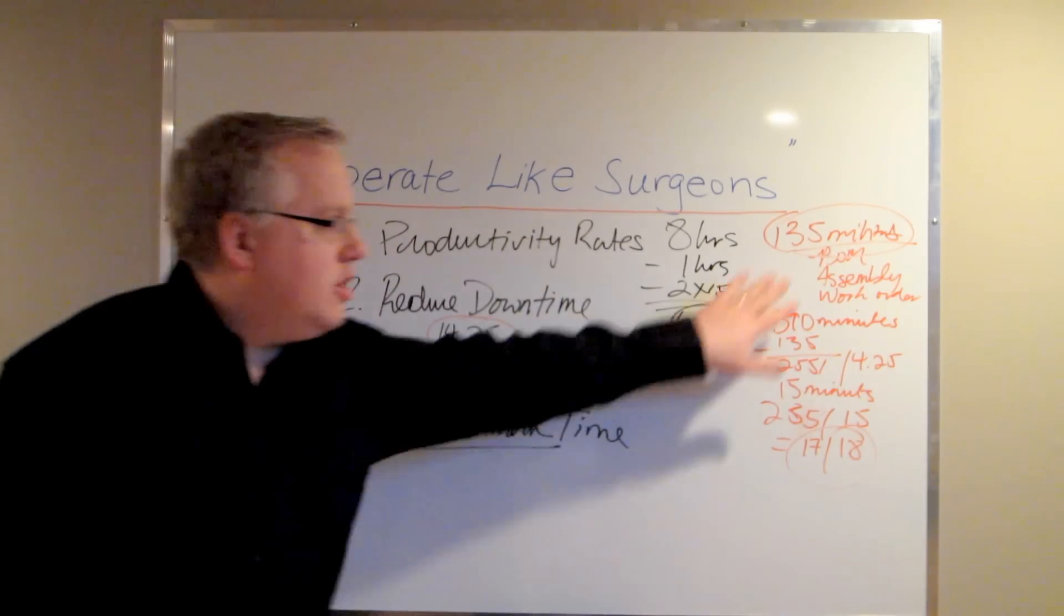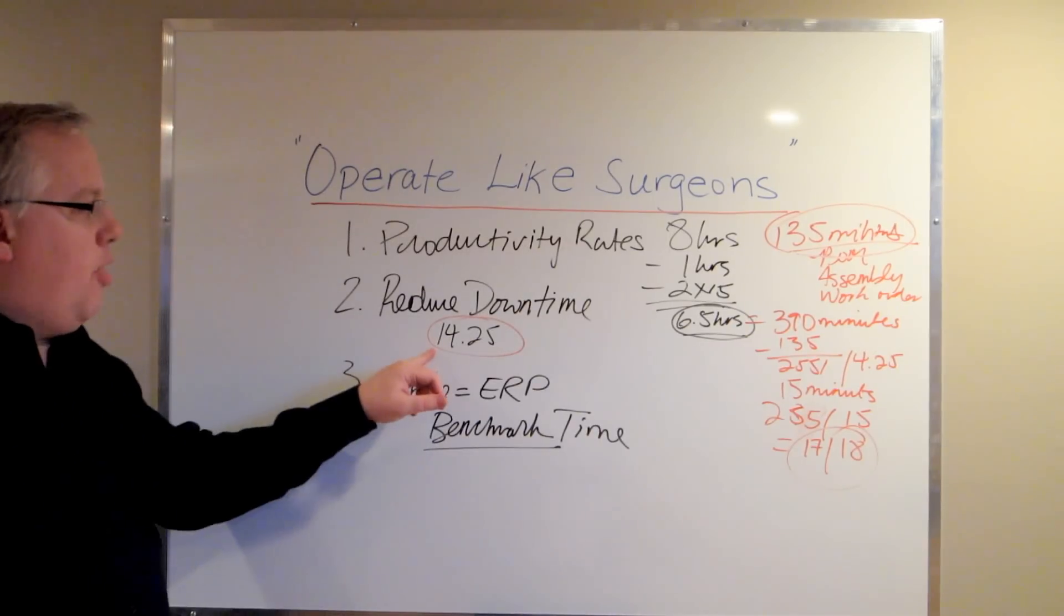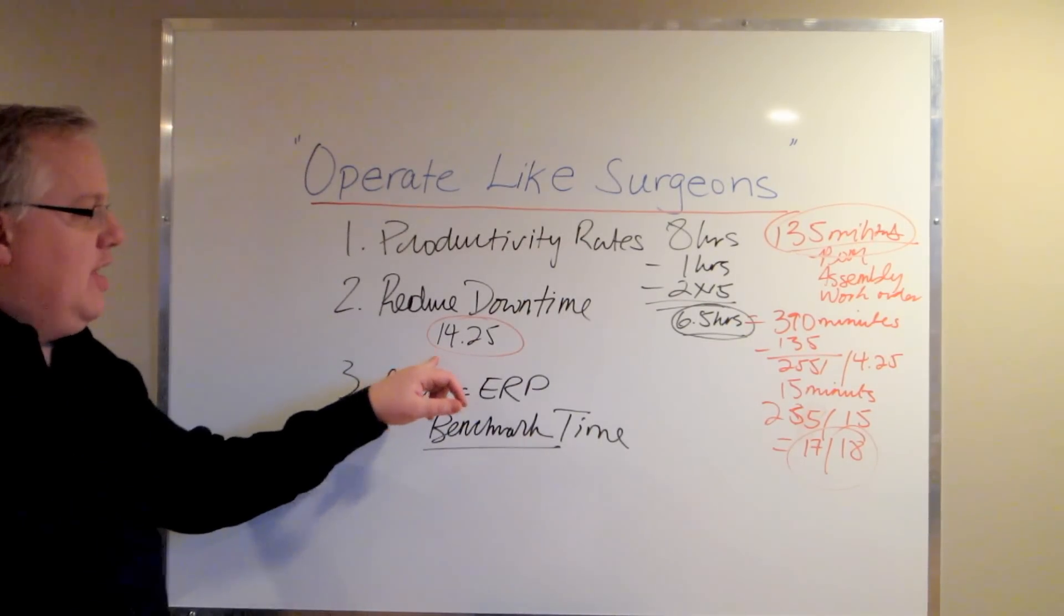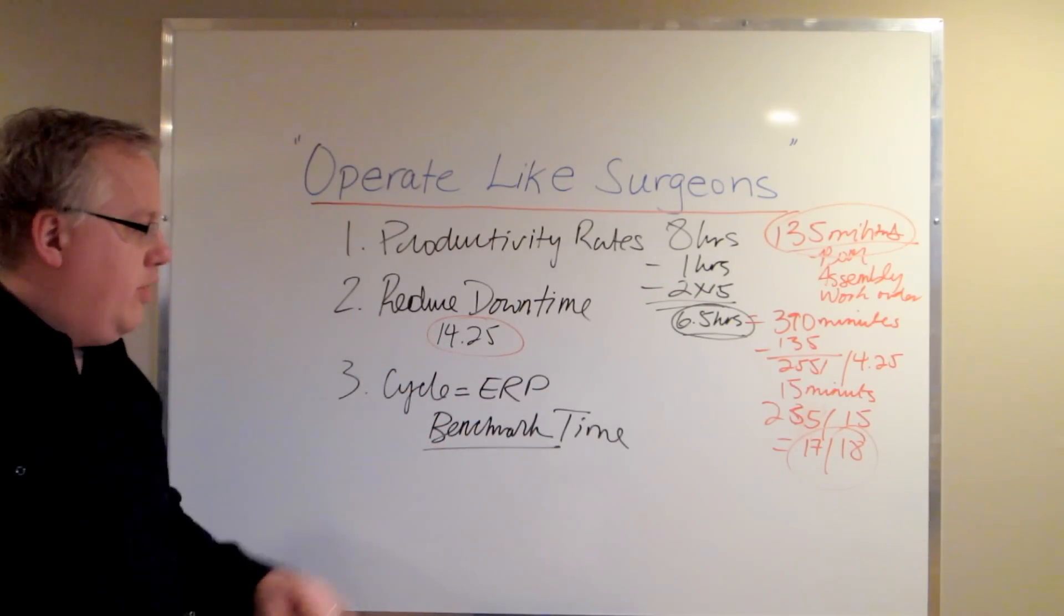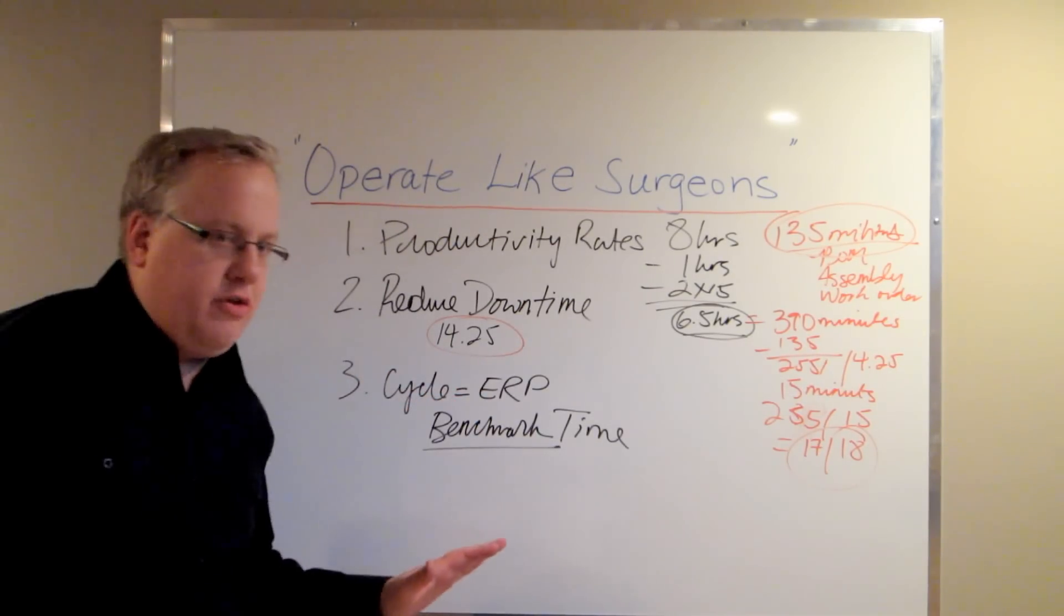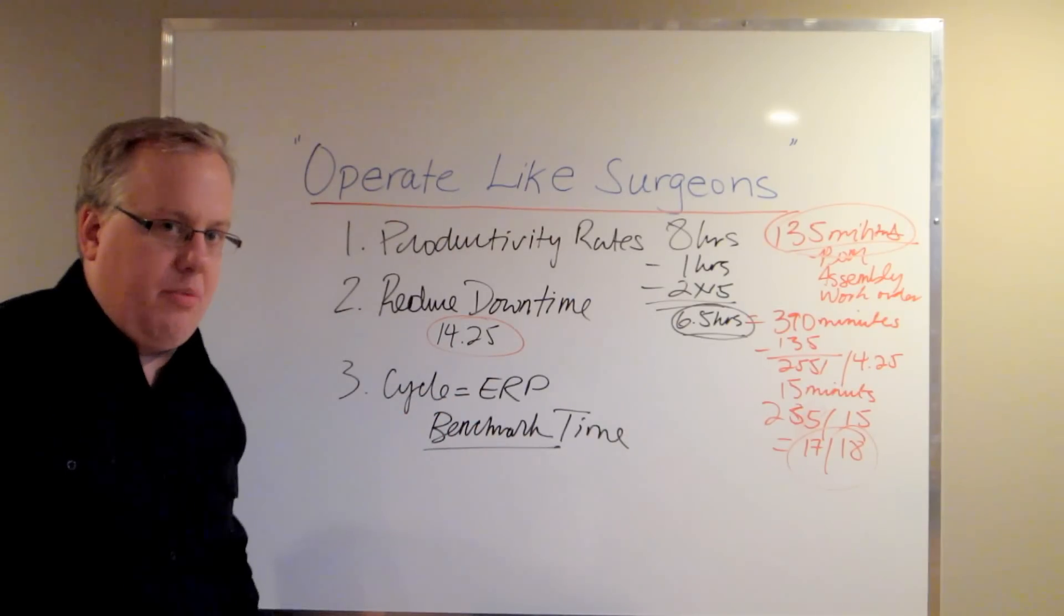We then attacked the causes here systematically over a couple of weeks, brought it down to 14.25, and that's considerable, that's a lot. And then we used this 14.25 as the time that we tracked all of our future variances on in terms of their ERP system.